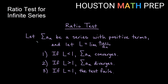The ratio test says if we are trying to decide the convergence or divergence of some infinite series with positive terms, the limit we use is the (n+1)th term over the nth term — that's our L. We decide if L is greater than 1 or less than 1, and that gives us information about convergence or divergence. If we get a limit of exactly 1, that's the case where the ratio test fails.